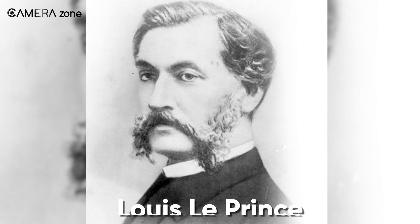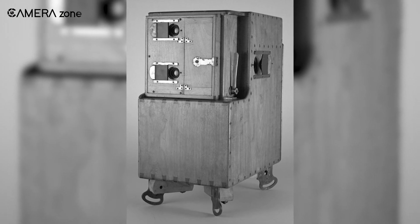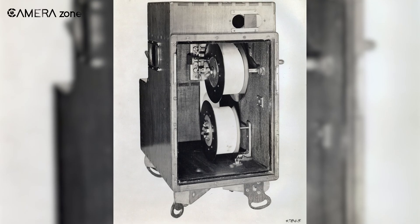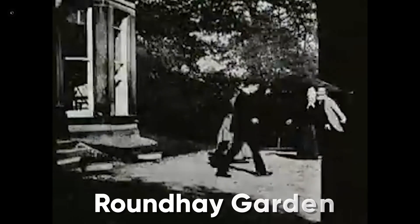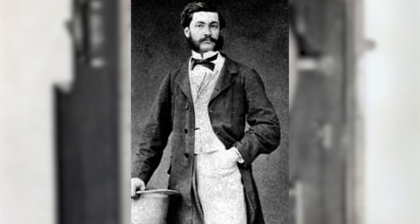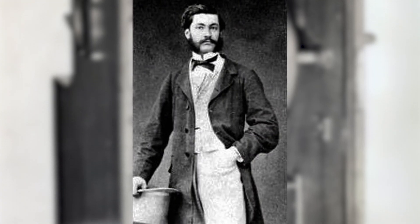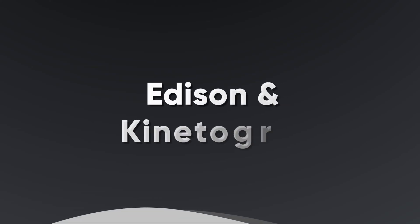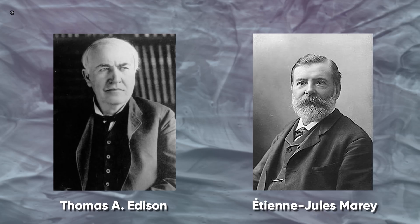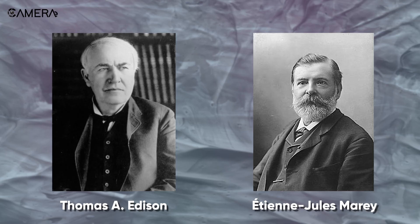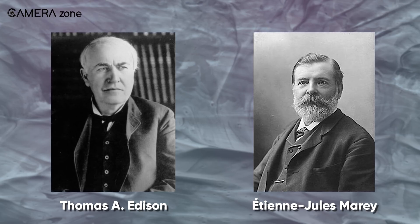This drawback was resolved by Louis Le Prince, who invented the single lens camera that used Eastman's paper negative film to record footage. With this camera, he filmed a moving picture sequence of family members called Roundhay Garden. However, not much information is known about his camera, as he suddenly disappeared in 1890.